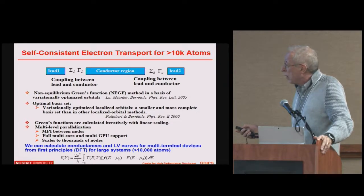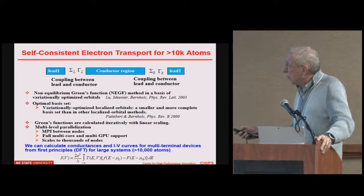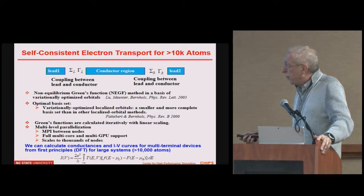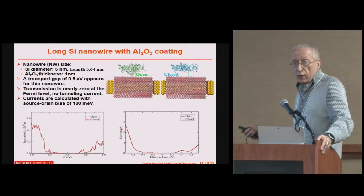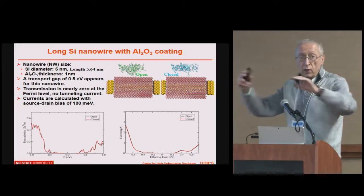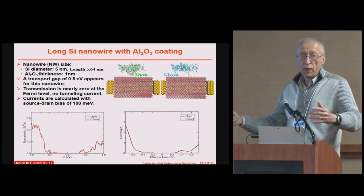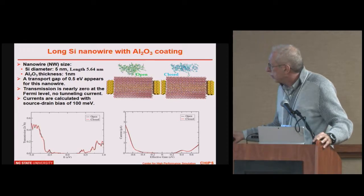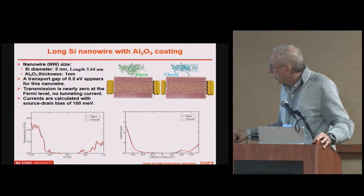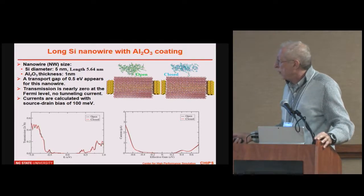Here we are calculating the current by integrating over the so-called transmission and Fermi factors — a many-body Green's function type approach. It parallelizes very well, with full multi-core and multi-GPU support, scaling to thousands of nodes. We have gold contacts and a silicon nanowire passivated with aluminum oxide, giving on the order of 10,000 atoms. We get transmission versus energy and current versus energy, and you can see the gaps — things are working.